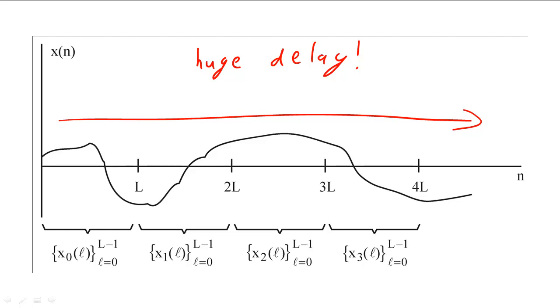To minimize this delay and still use the FFT, we can split the input into a set of shorter signals. We would then convolve each of these shorter signals with the filter.